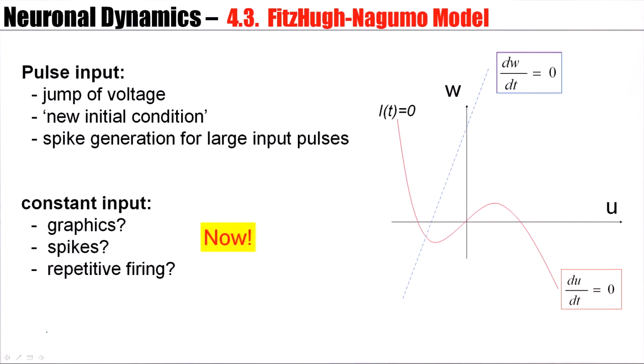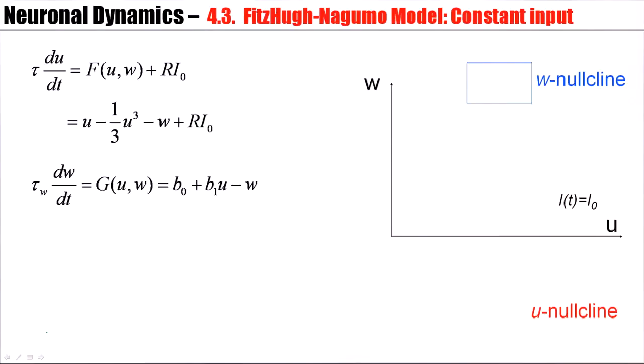And this is what we are going to discuss now. Again, our FitzHugh-Nagumo model with our choice of parameters. The u-nullcline is a straight line. The w-nullcline is a cubic function.